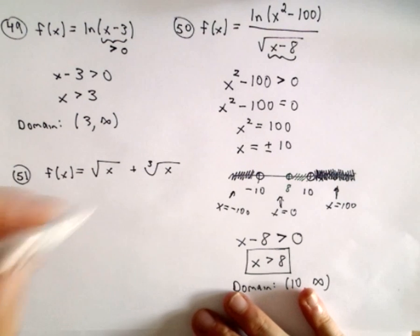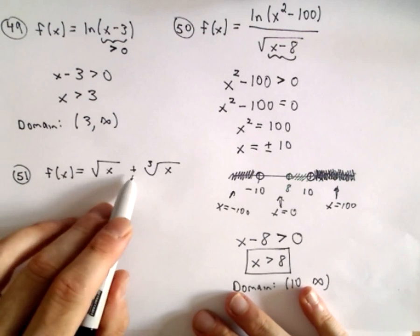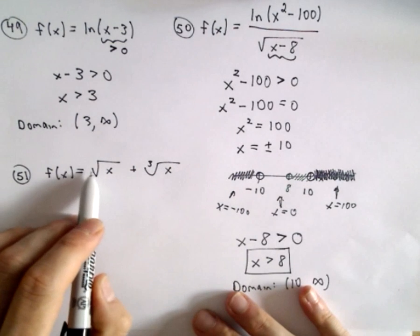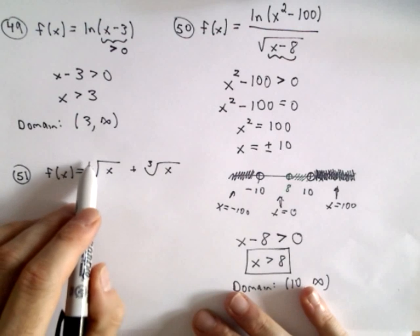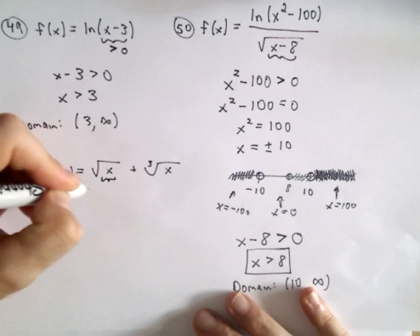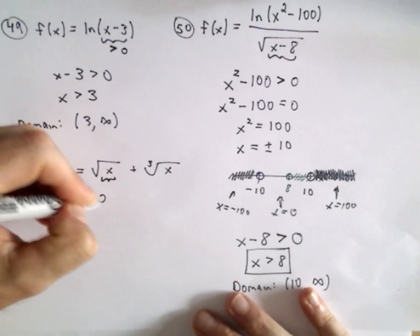So, last but not least, here's 51. We've got the square root of x plus the cube root of x. Okay, so we said for square roots, or really any even powered root, fourth root, sixth root, eighth root, the quantity underneath the radical has to be greater than or equal to zero.